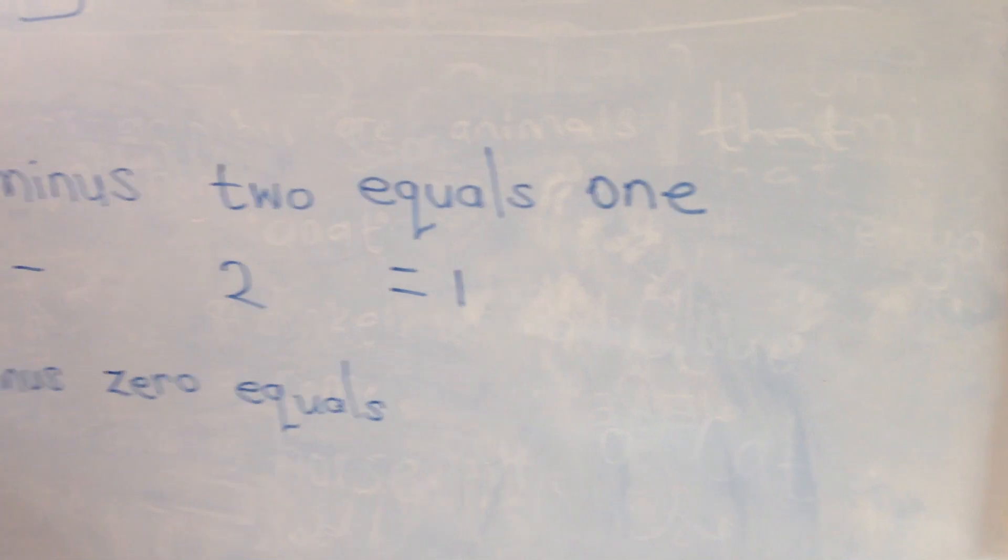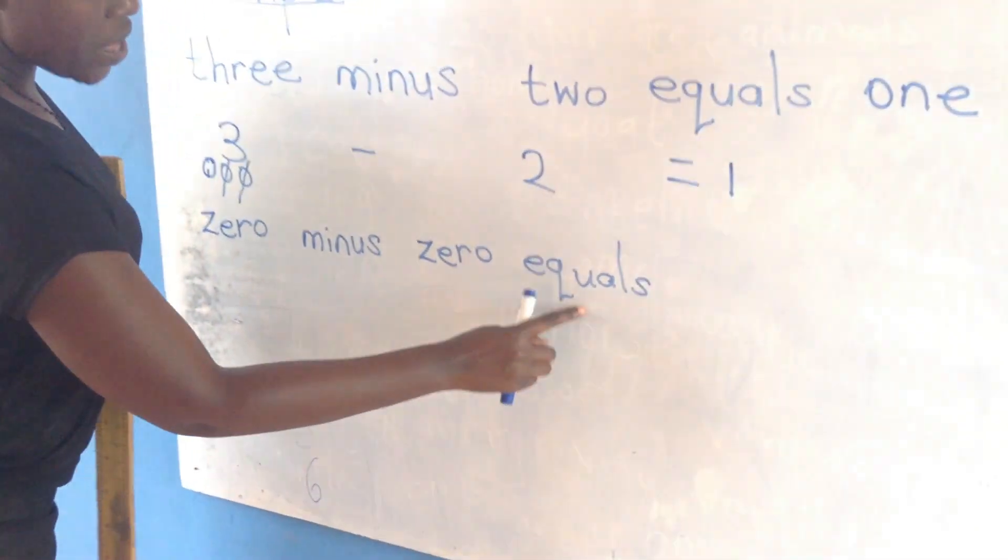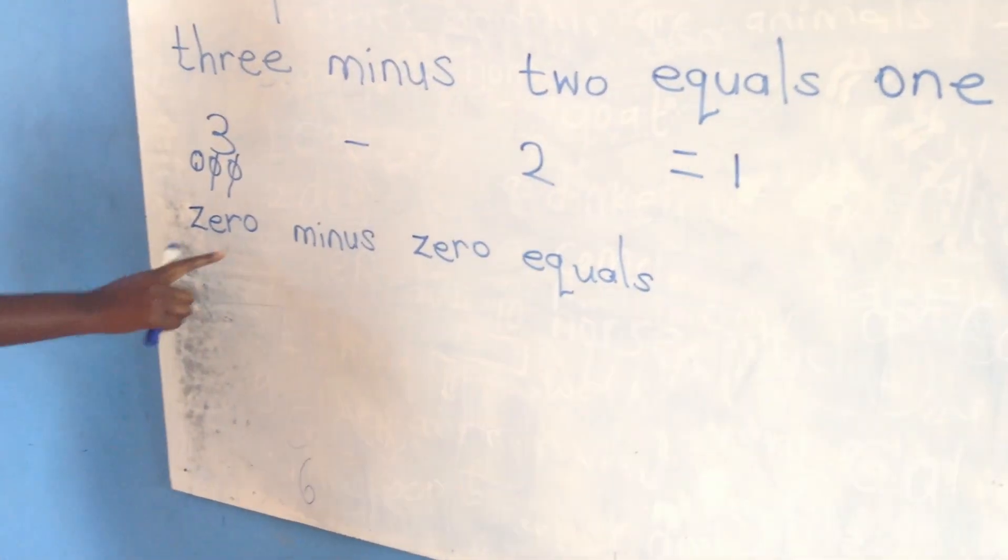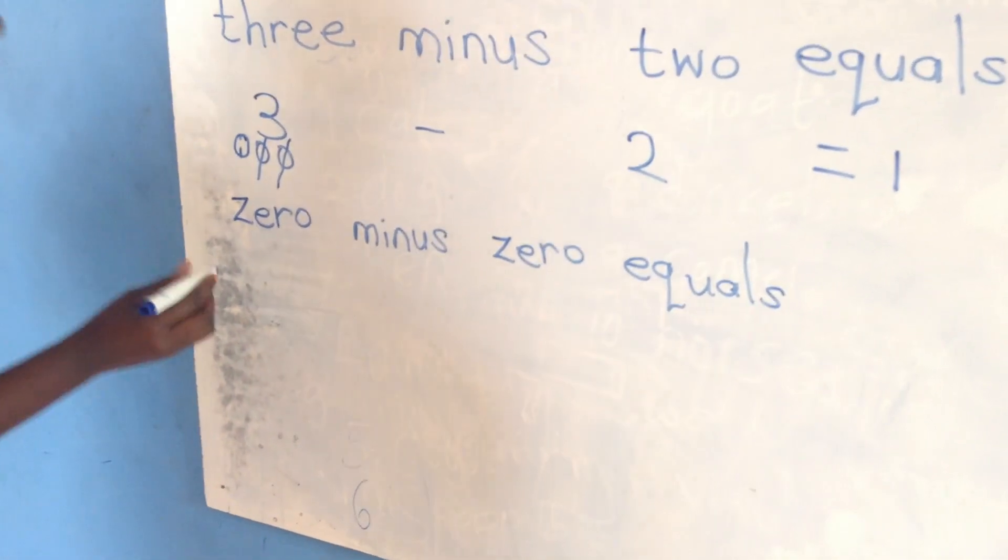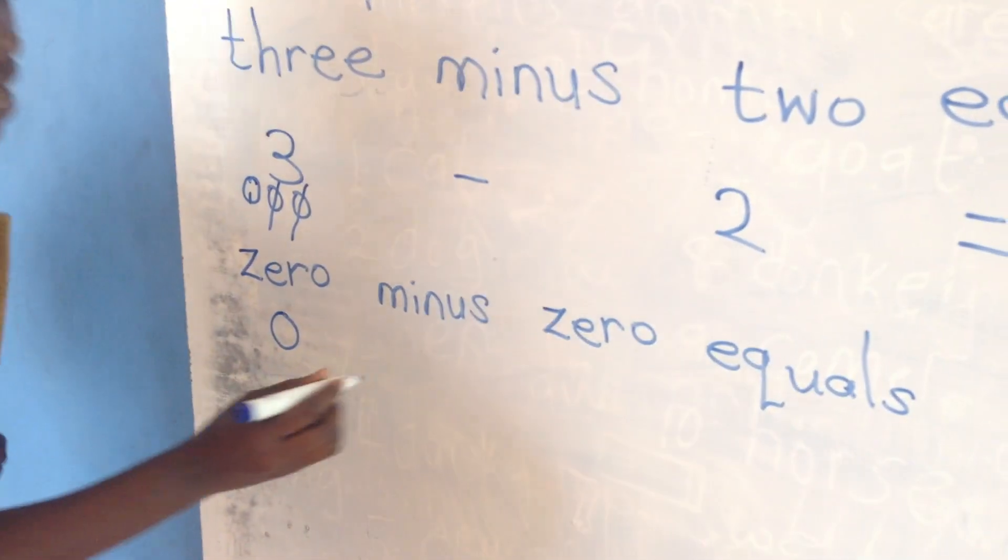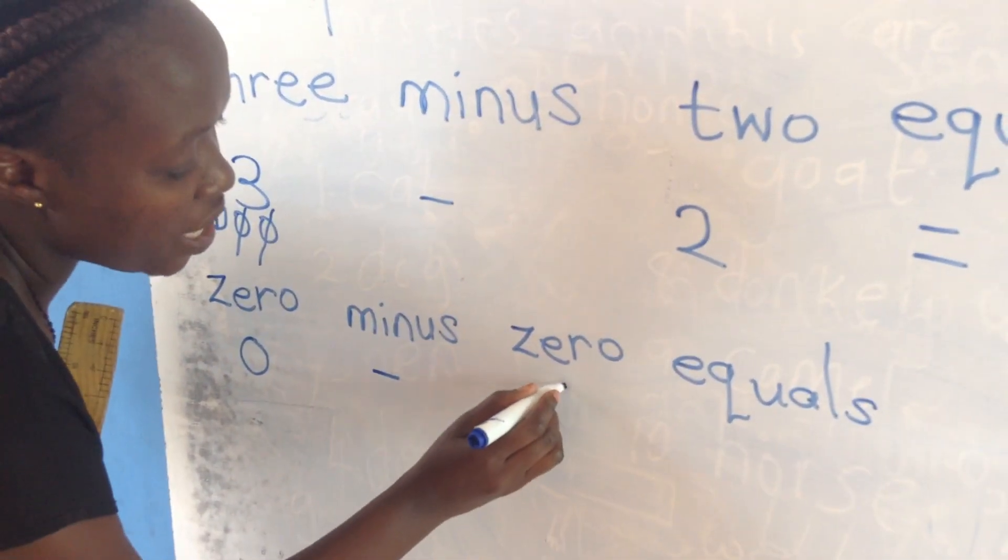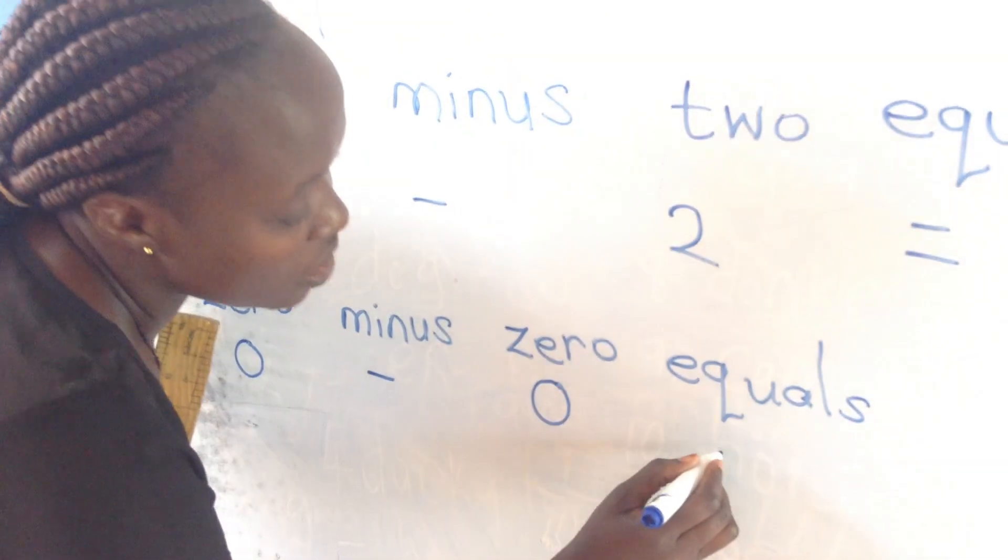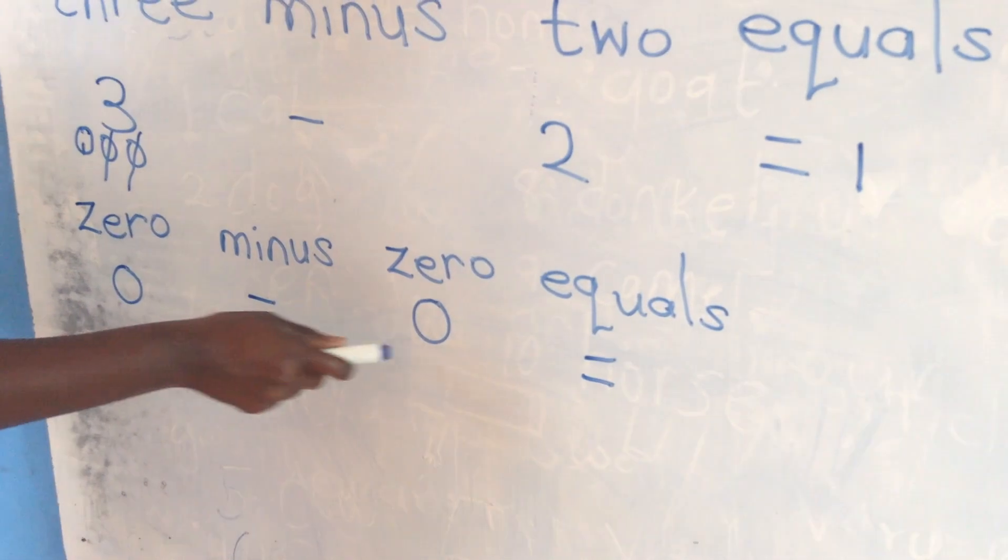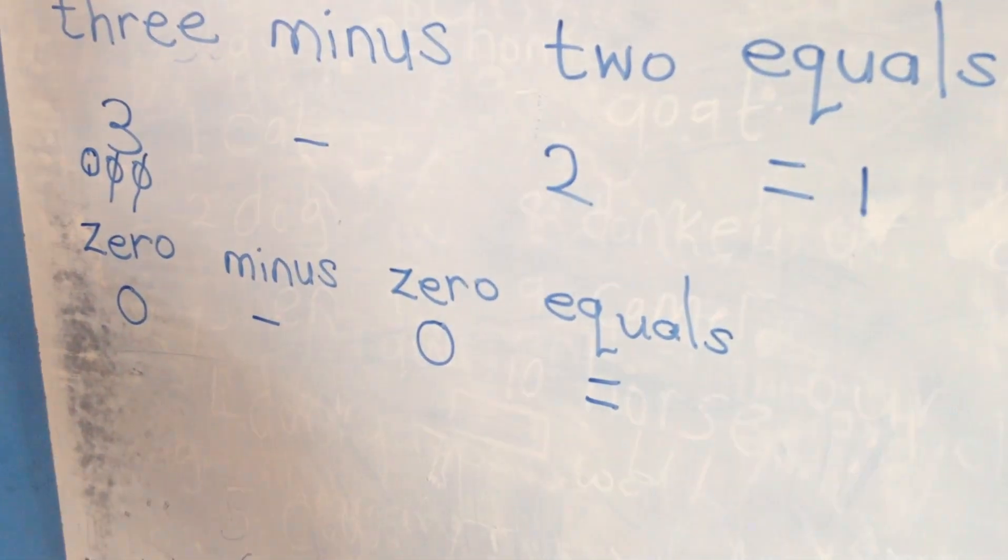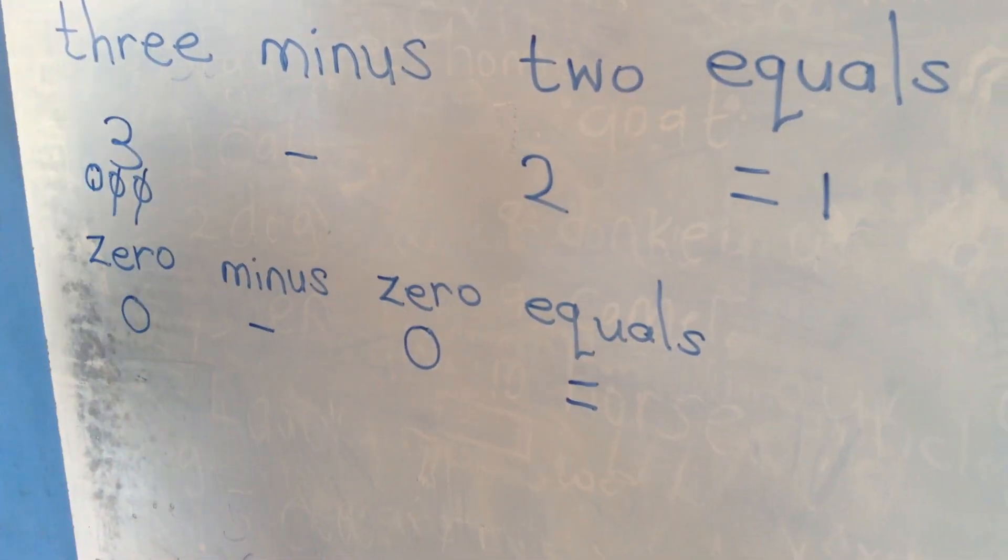Another example, zero minus zero equals. Zero minus zero equals. Zero, you write your number zero. Minus, you write the sign minus. Zero, you write your number zero. Equals, you write the sign equals. Zero minus zero equals. Zero means nothing. So, zero minus zero equals to zero.